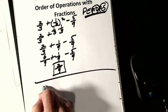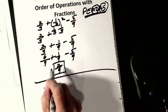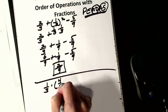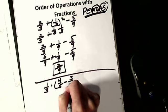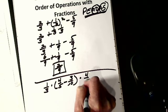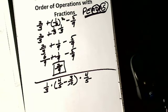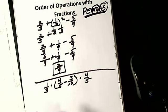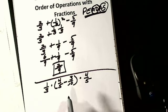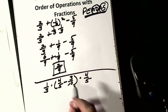Let's do one a little bigger: one-third times four-fifths minus three-tenths, times four-fifths. Now it might look bad, but I have to do what's in parentheses first. That means I have to do this addition and subtraction, so I need to get a common denominator.